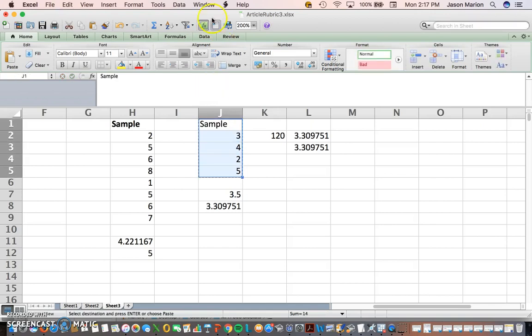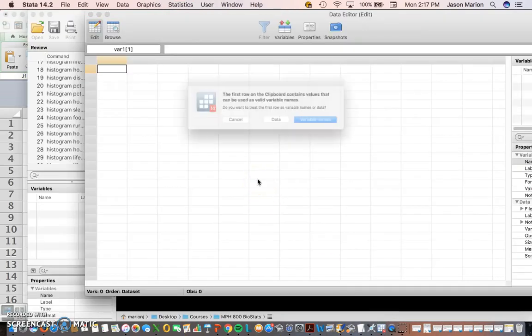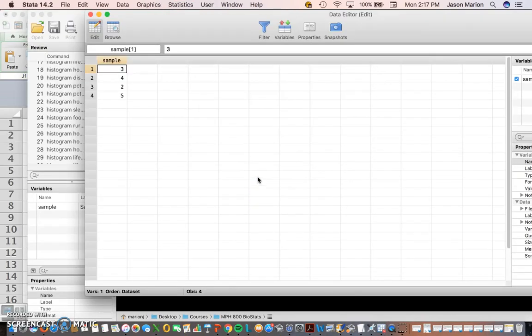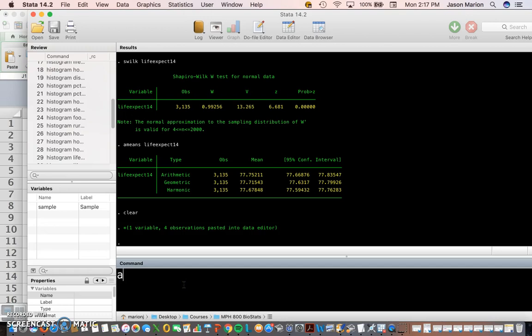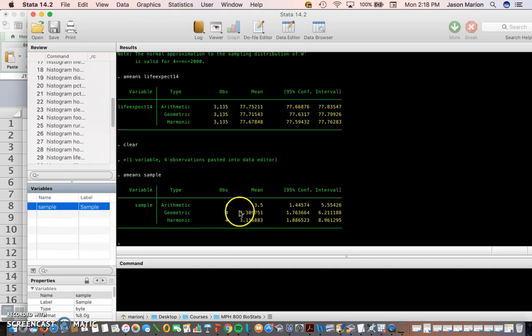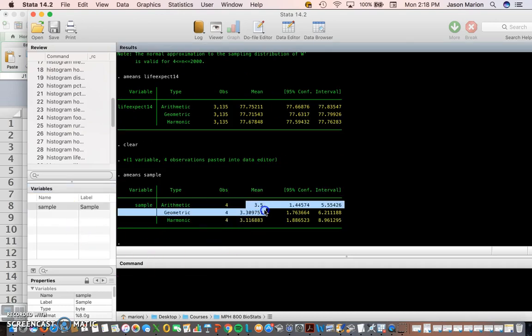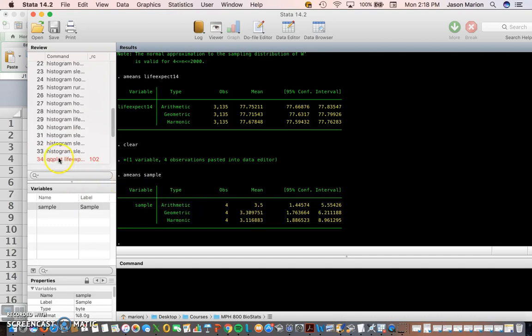I'm going to copy them, Ctrl+C. I'm going to go over to Stata, paste them in. I paste them into Stata. They're there, see them. And then I can do AMEANS sample.